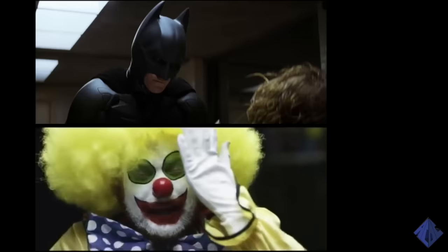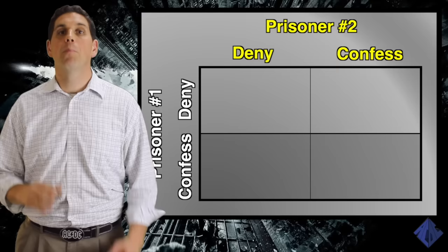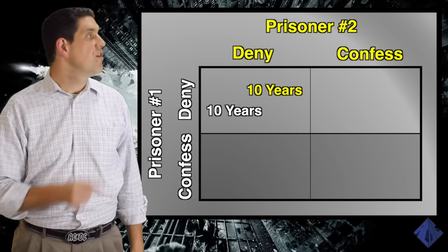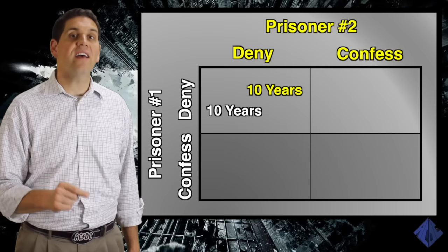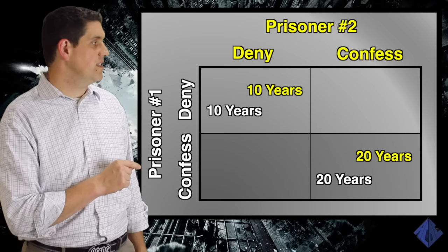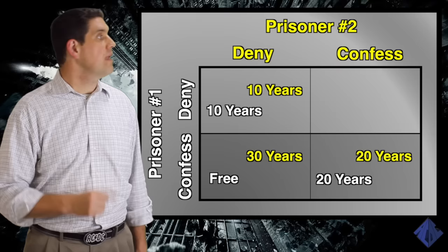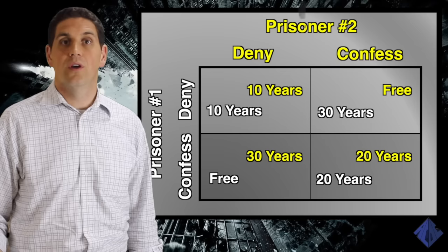Let's talk about the classic example of game theory: the prisoner's dilemma. Assume two people were arrested, charged with a crime, and put in two different cells. Prisoner one and prisoner two have only two choices — they can either deny or confess to the crime — meaning there are four possible outcomes. If they both deny, there's enough enough to put them in jail for 10 years each. The numbers on the left are prisoner one and on the right are prisoner two. If they both confess, they both go to jail for 20 years. If prisoner one confesses and prisoner two denies, prisoner one goes free and prisoner two goes to jail for 30 years. If prisoner one denies and prisoner two confesses, prisoner two goes free and prisoner one goes to jail for 30 years. So, what are they going to choose?